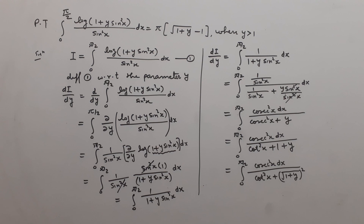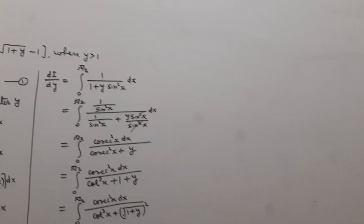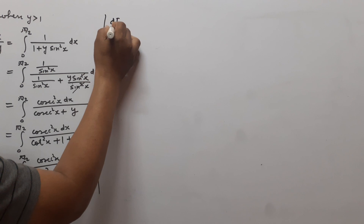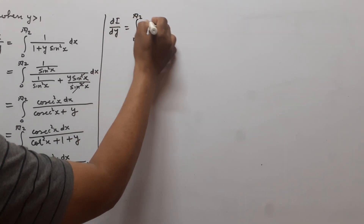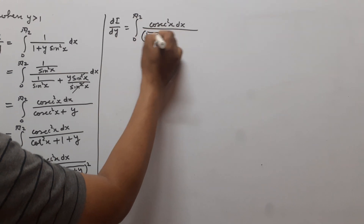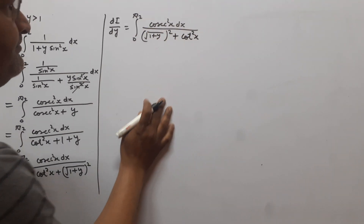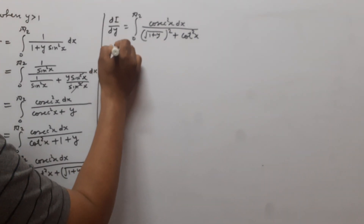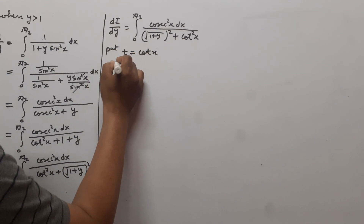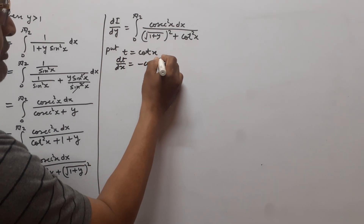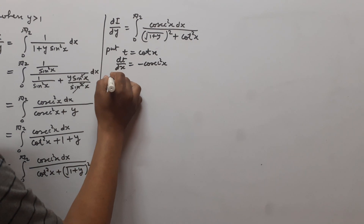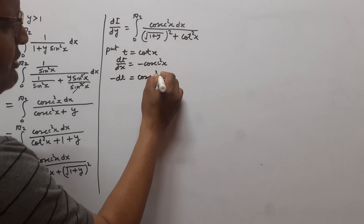We use the method of substitution for integration. We write the integral as ∫₀^(π/2) csc²x / ((√(1+y))² + cot²x) dx. Put t = cot x. We differentiate: dt/dx = −csc²x. So differentiation of cot x with respect to x is −csc²x, and from here we write −dt = csc²x dx.